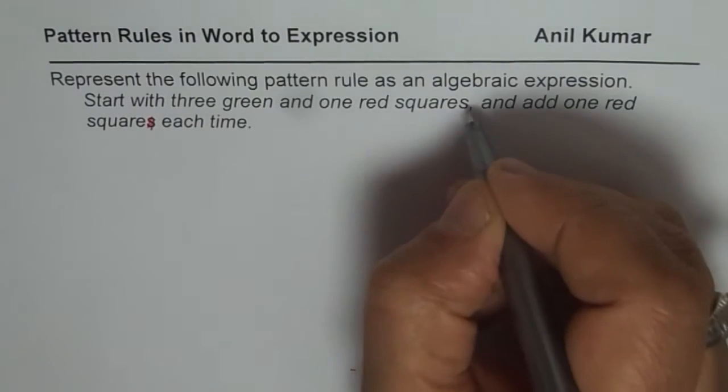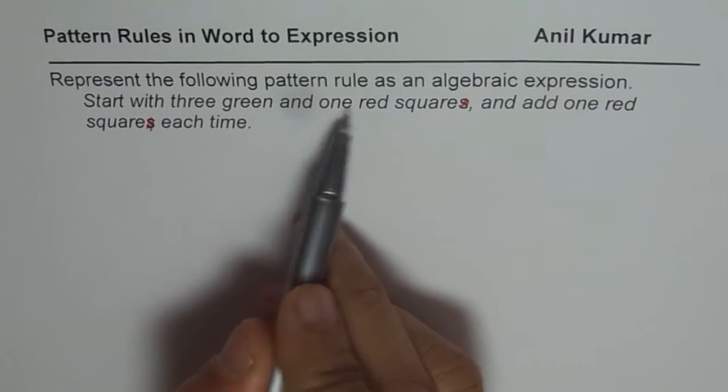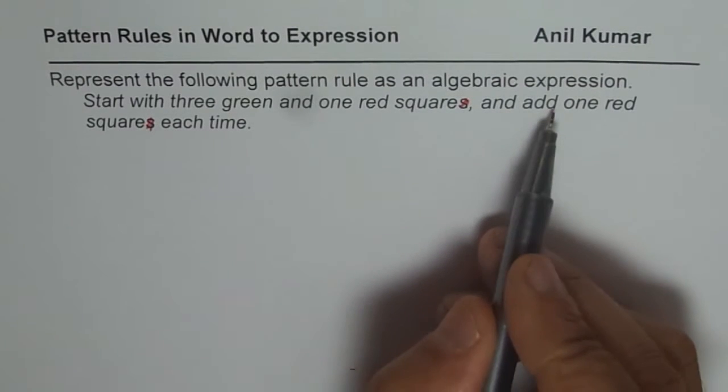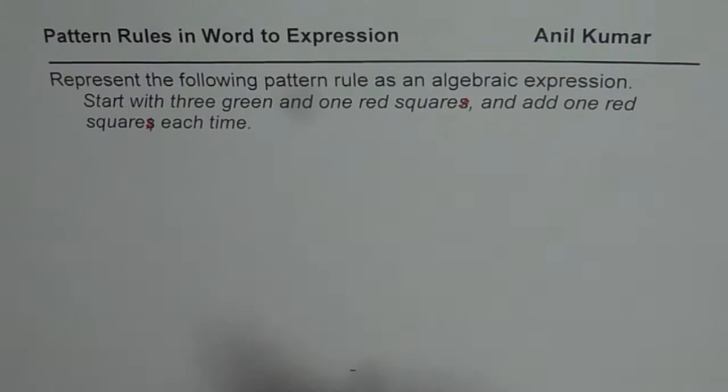Start with 3 green and 1 red square and add 1 red square each time. So what we need to do is start with 3 green and 1 red square and add 1 red square each time. That is the kind of pattern we are given.